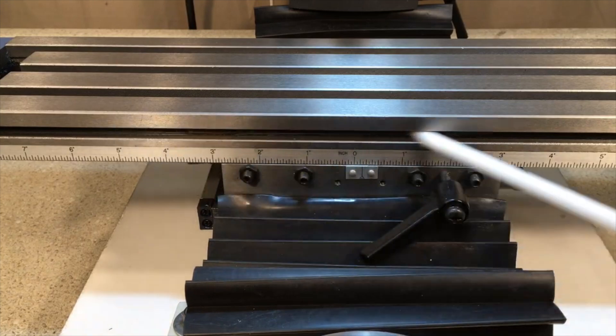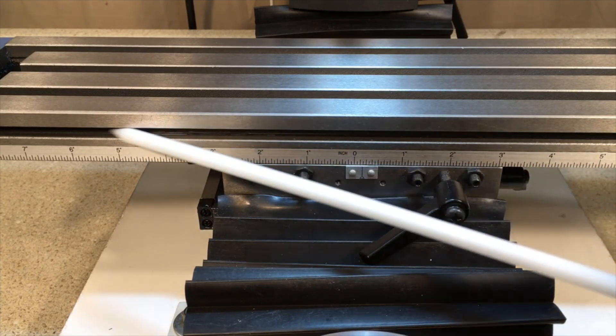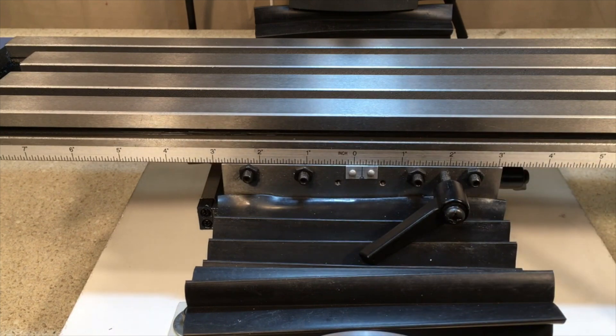The slot in the front of the table here is used for mounting physical stops that are used with a power feed option that we'll look at later on.